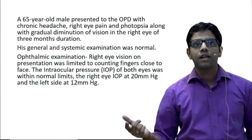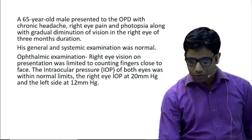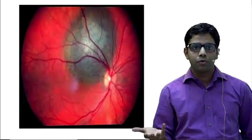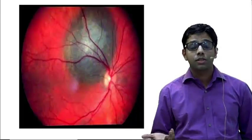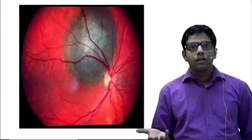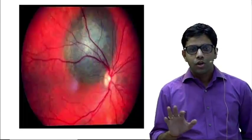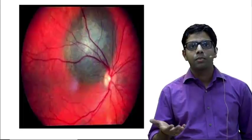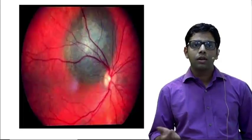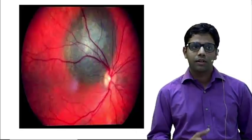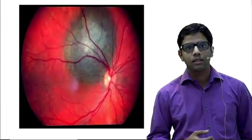Why was the patient having gradual diminution of vision? If the fovea is involved — which is the source of maximum vision and appears involved in this case — vision will be reduced. There can also be associated retinal detachment or cystoid macular edema leading to diminution of vision. From this, we would like to confirm whether it is melanoma, metastasis, or hemangioma, and we should proceed to radiological investigation.